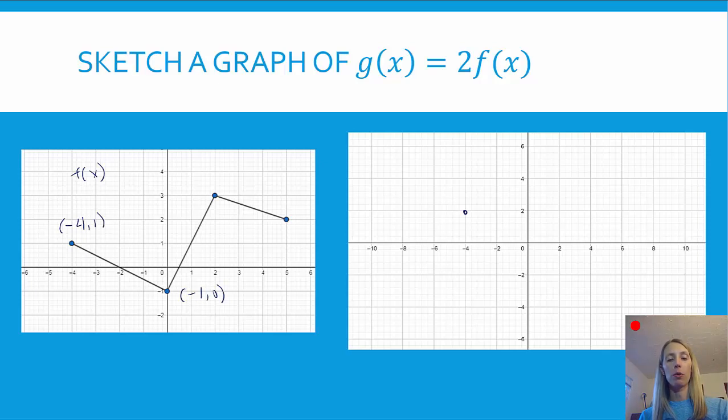Down here, we have negative 1, 0. It's going to double the y coordinate, which actually does nothing. It just stays at negative 1, 0. Over here, we have 2, 3. We're going to double the y coordinate, that's going to put us at 2, 6. And lastly, we have 5, 2. Double the y coordinate, that would put us at 5, 4.